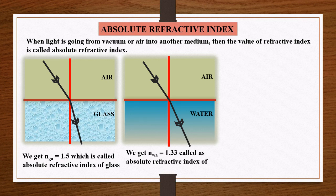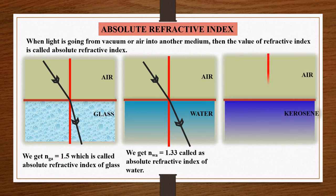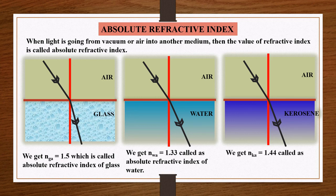If we calculate the refractive index of water with respect to air, we get n equal to 1.33, which is called the absolute refractive index of water. Consider another situation where air and kerosene are present and light is coming from air and entering into kerosene. If we calculate the refractive index, we get n equal to 1.44, and this is called the absolute refractive index of kerosene.